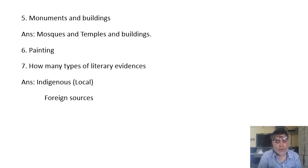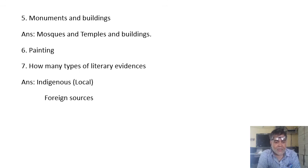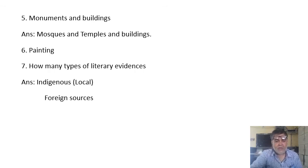Foreign writers, particularly British writers, started written work on our country's history. One such writer was Sir William Jones. He established the Asiatic Society of Bengal in Calcutta City in the 1780s. He started to translate foreign books into Indian languages and Indian language books into European languages. To repeat: there are two types of literary evidence — first is indigenous, and second is foreign sources.